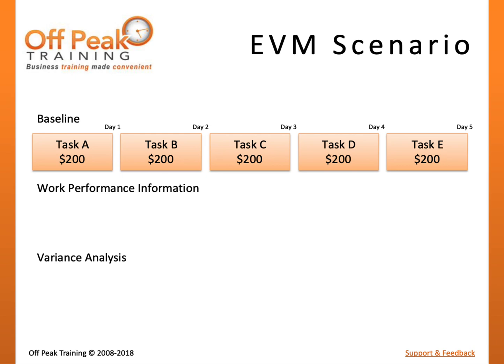Let's begin by visualizing performance. On Day 1, you complete Task A at a cost of $200. If we were to perform variance analysis to measure performance, it appears that we are exactly on budget and on schedule.